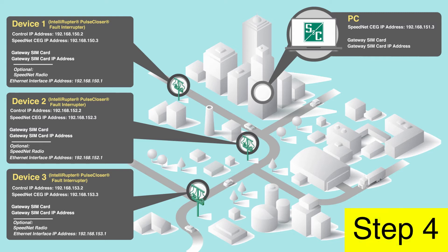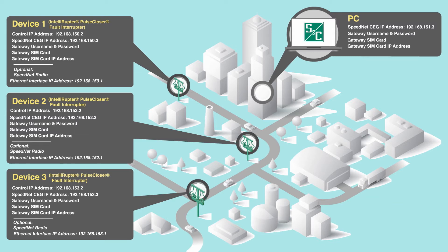Step 4: Obtain the default username and passwords required for setup. All Speednet gateways are shipped with the same default username and password. For S&C hardware, these can be requested from S&C by calling the Global Support and Monitoring Center at the number on page 5 of Instruction Sheet 1076-530, or by contacting S&C through the S&C Customer Portal at snc.com.